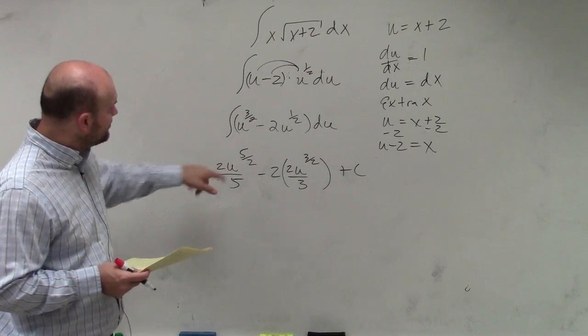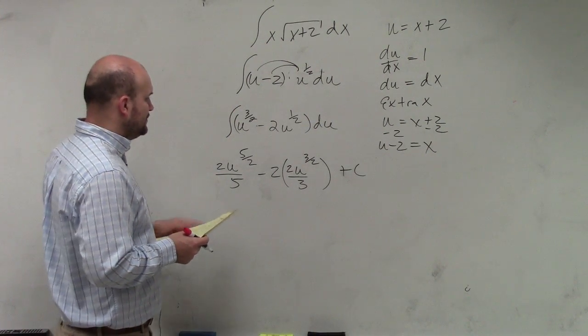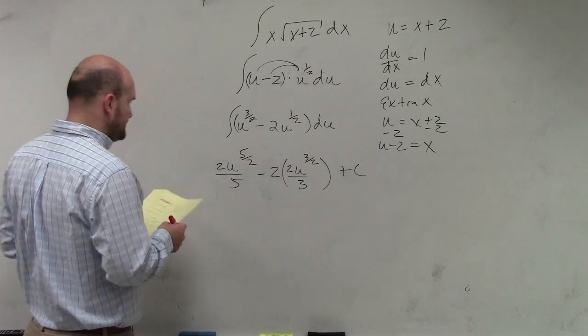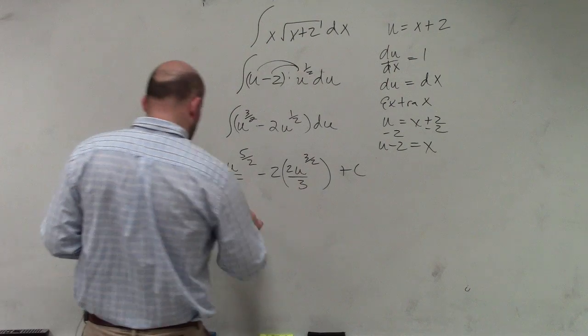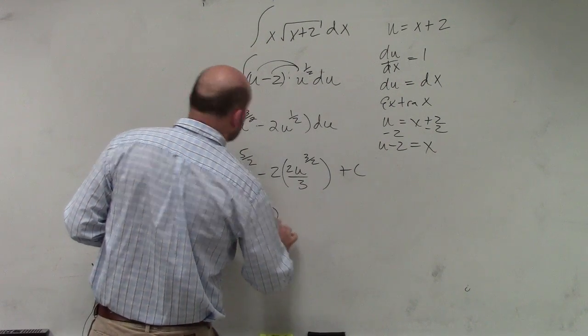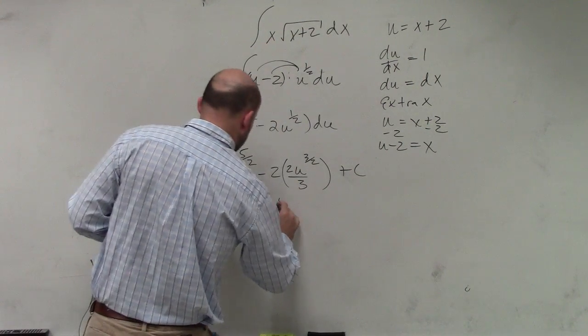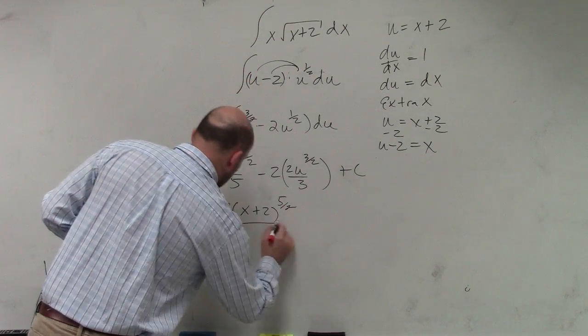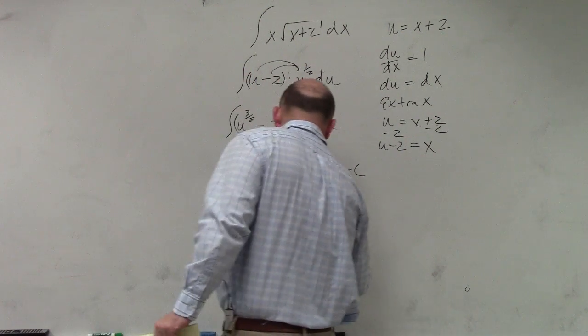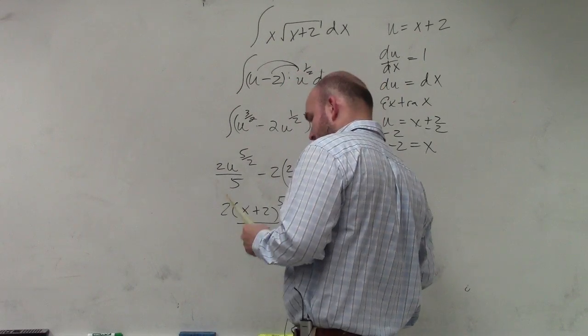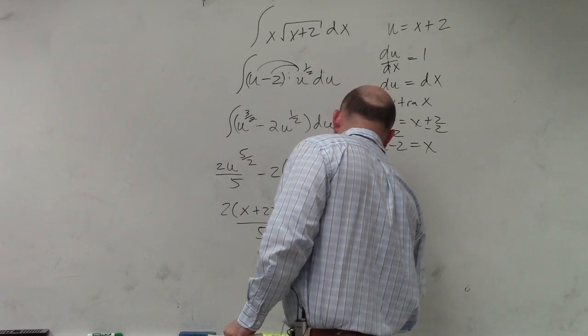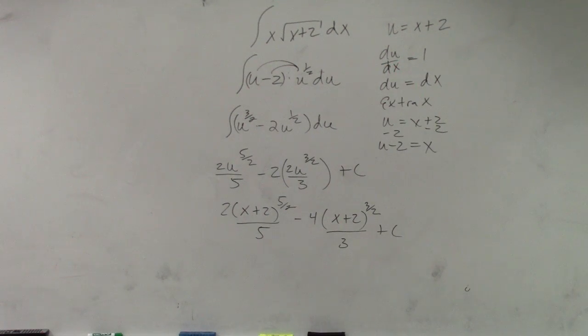Then, now what I can do is go ahead and plug back in my u's, and I can multiply this negative 2 and 2. So, therefore, my final answer is 2 times x plus 2, because that was my u, to the five-halves, divided by 5 minus 4, times x plus 2 to the three-halves, divided by 3 plus c. Okay, got it, Mary? All right.